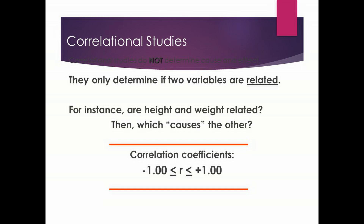Before we begin talking about correlational studies in detail, I want to introduce you to the correlation coefficient. A correlation coefficient is the result of conducting a correlational study, and it describes the degree of relationship between two variables. Correlation coefficients are represented by a lowercase r, and the value is going to be between minus 1 and positive 1, so: minus 1 ≤ r ≤ positive 1.